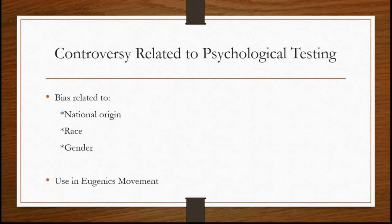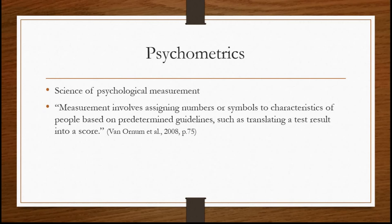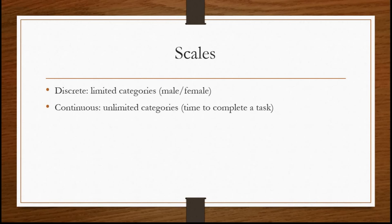I wanted to take a few more minutes to talk about psychometrics, moving into chapter three in your textbook. Psychometrics is the science of psychological measurement. Your book says that measurement involves assigning numbers or symbols to characteristics of people based on predetermined guidelines, such as translating a test result into a score. I want to talk about the sorts of scales we use in psychological measurement — scales being ways of assigning a score to a test subject.